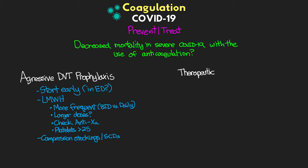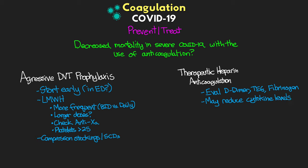Since these patients appear severely hypercoagulable, therapeutic heparin anticoagulation should be considered. When evaluating for heparin use, look at D-dimer, TEG, and fibrinogen levels — if these are elevated, systemic heparin may be worth considering. Heparin may also help reduce cytokine levels, potentially preventing the cytokine storm. However, in late stages of the disease, patients may have hemorrhagic risk, which could make heparin potentially harmful.